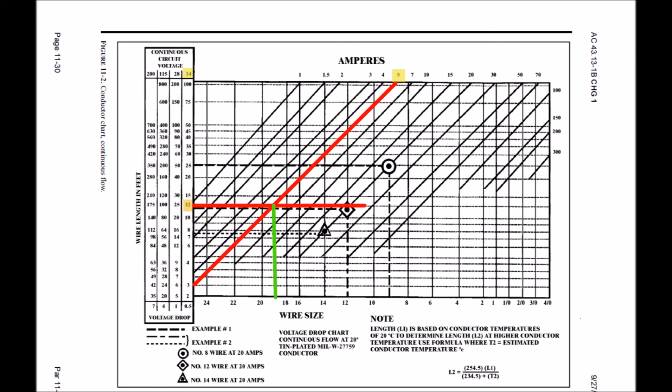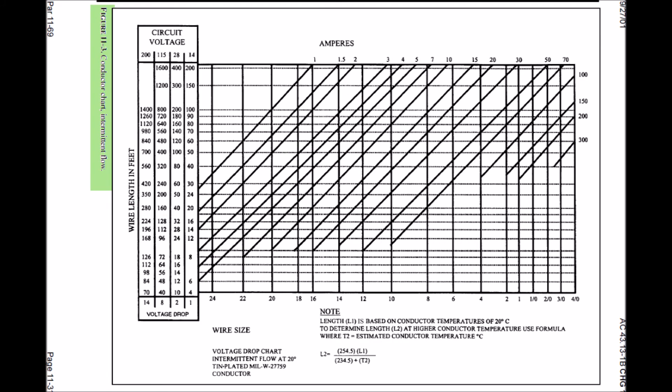If you're a metal airplane, you're going to use the skin of the airplane as your ground return, so that's not applicable. In this same advisory circular, you will see there is an intermittent flow chart, and it works exactly the same way, except there is a slightly smaller allowable wire size for intermittent flows.